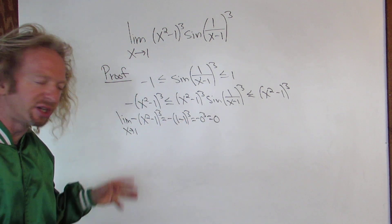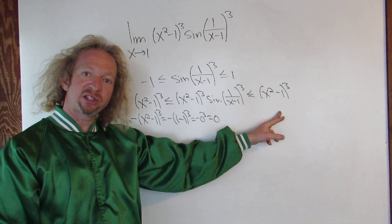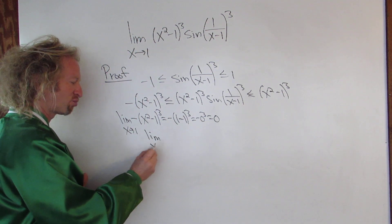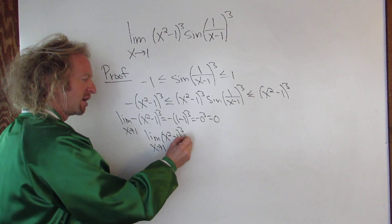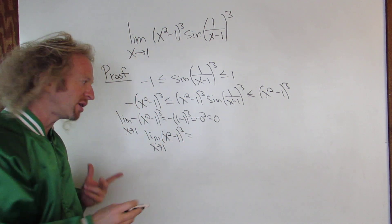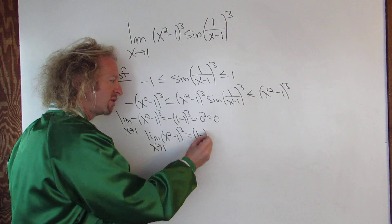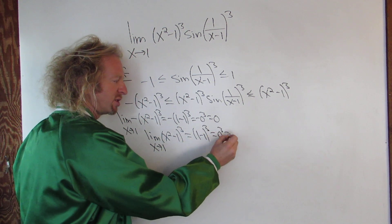Then you do the same thing, you take this limit over here, so limit as x approaches 1 of (x squared minus 1) cubed. Same thing, you plug in 1, 1 squared is 1, so you get (1 minus 1) cubed, 0 cubed, so you get 0.